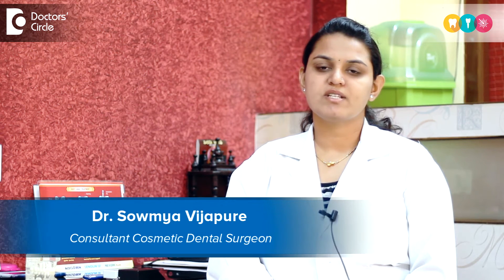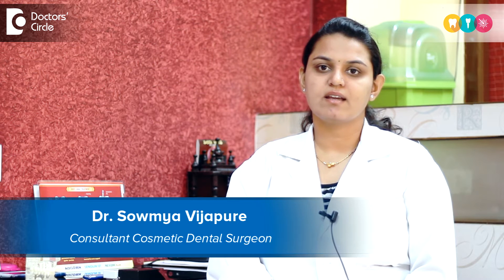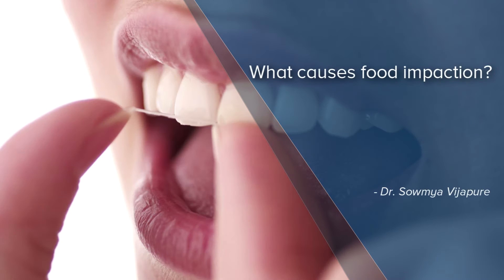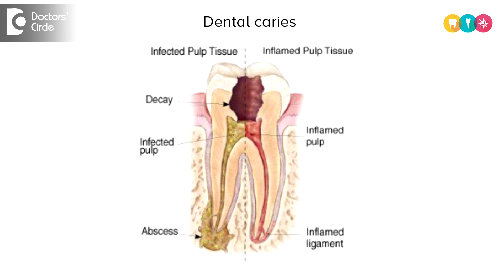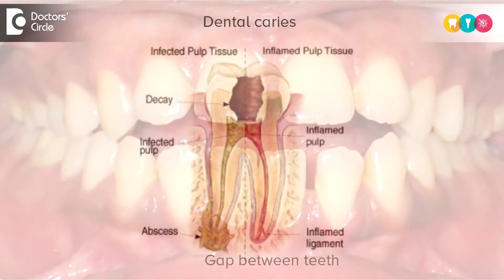Hello, this is Dr. Soumya Vijapuri from Care Dental Clinic, Kormangla, Bangalore. Food impaction is the forceful wedging of food into the gum tissue. There are various reasons why this happens, the most common being the decayed or carious tooth, and gaps between the teeth.